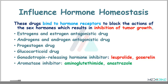Lastly, we have anticancer drugs which influence hormone homeostasis. These drugs work by binding to hormone receptors to block the action of sex hormones, resulting in inhibition of tumor growth. Examples include estrogens and estrogen antagonists, androgens and androgen antagonists, progestogen drugs, glucocorticoid drugs, gonadotrophin releasing hormone inhibitors like leuprolide and goserelin, and aromatase inhibitors like aminoglutethimide and anastrozole.